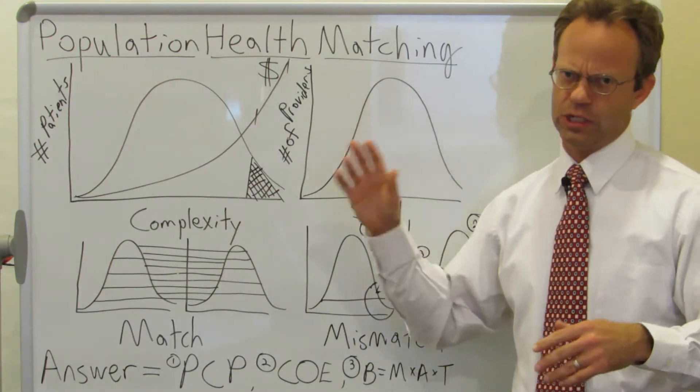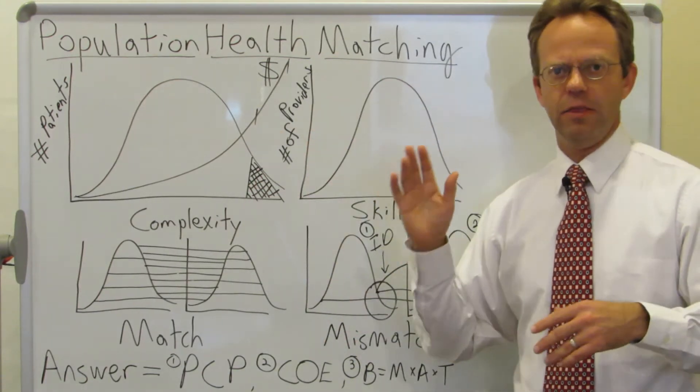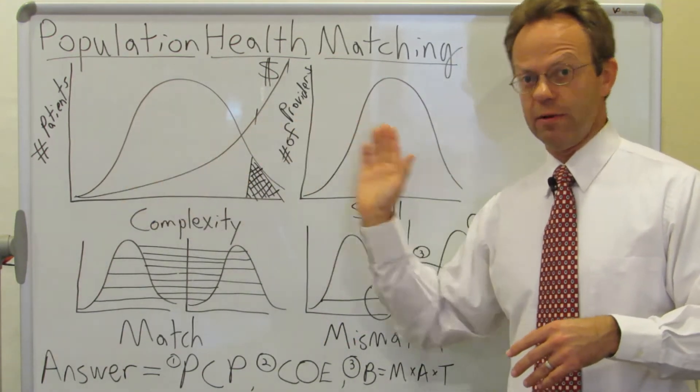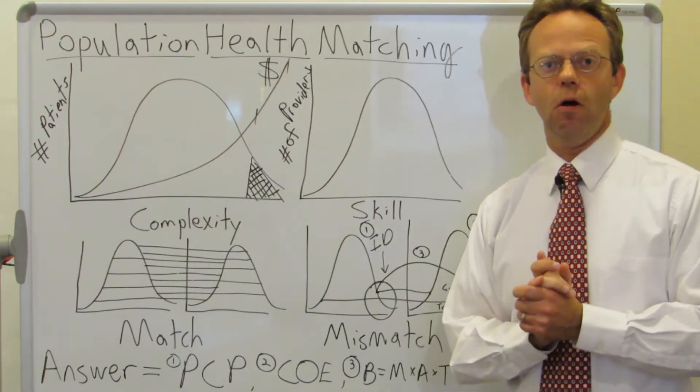Like, as much as, of course, we physicians would like to think that we're all over on this side, the fact of the matter is that there's a range, right? And that range is a bell-shaped curve.